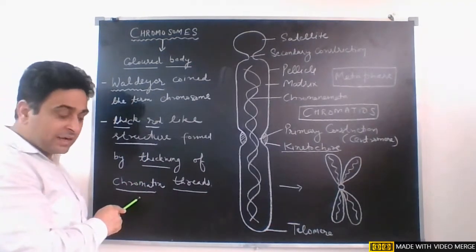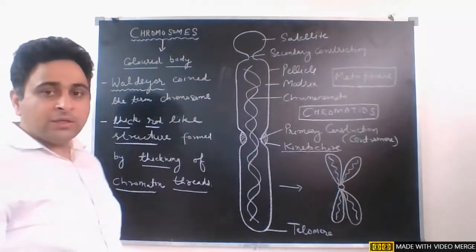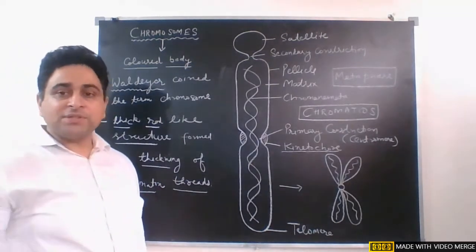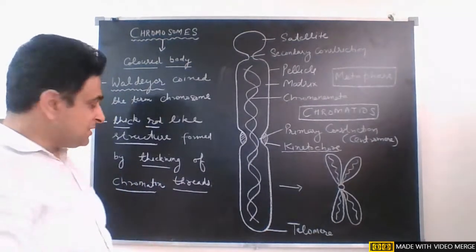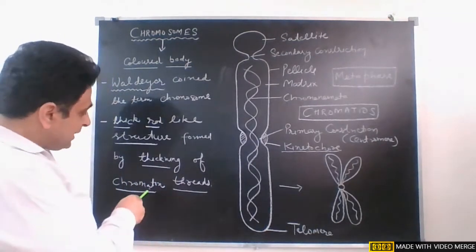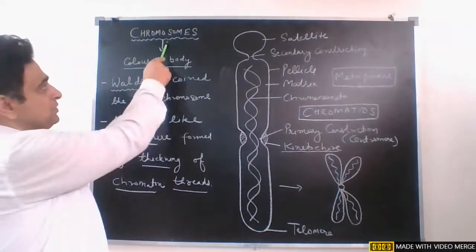Chromatin threads are the structures which are observed before cell division. When cell division starts, these begin to get thick and condense, turning into chromosomes.